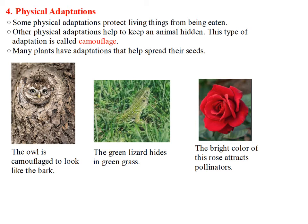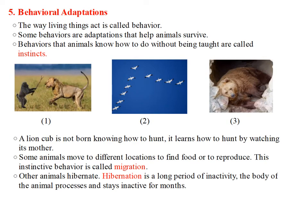In the first picture on the left, we can see that the owl is camouflaged to look like the bark. In the second picture, we can see the green lizard hides in green grass. And in the picture on the right, we can see that the bright color of this rose attracts pollinators. Now we are moving to behavioral adaptations. The way living things act is called behavior. Some behaviors are adaptations that help animals survive. Behaviors that animals know how to do without being taught are called instincts.